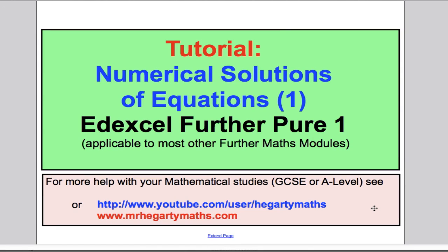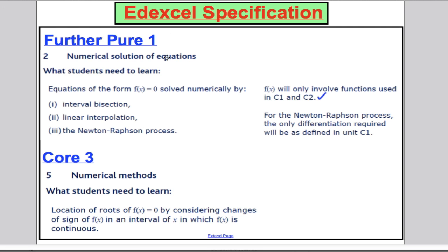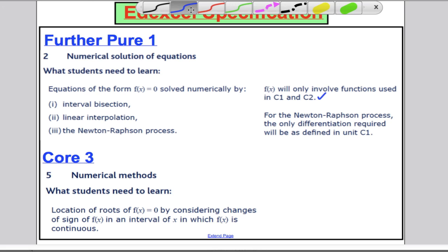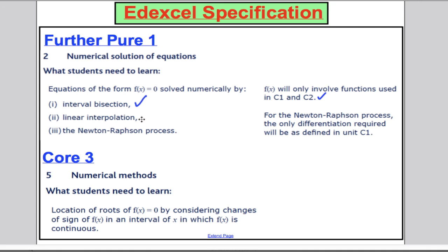Welcome to another video for the Edexcel Further Pure One Maths A-Level Syllabus. In this video, we're going to start our work on numerical solutions of equations. The Further Pure One course essentially asks us to be able to perform the following numerical methods: interval bisection, linear interpolation, and the Newton-Raphson process. All of those things will approximate a solution to f(x) = 0, giving us a root of the function f(x).